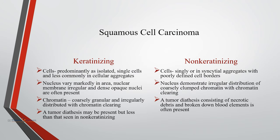Squamous cell carcinoma can be of keratinizing or non-keratinizing type. In the keratinizing type, cells are predominantly arranged as isolated single cells and less commonly in cellular aggregates. Nuclei vary markedly in area, nuclear membranes are irregular, and dense opaque nuclei are often present. Chromatin is coarsely granular and irregularly distributed with chromatin clearing. Tumor diathesis may be present but is less common than in non-keratinizing type. In non-keratinizing type, cells are arranged singly or in syncytial aggregates with poorly defined cell borders, demonstrating irregular coarsely clumped chromatin with chromatin clearing. Tumor diathesis is much more common and consists of necrotic debris and blood.